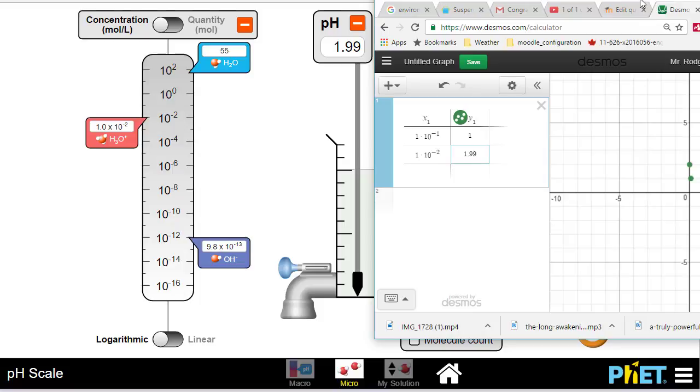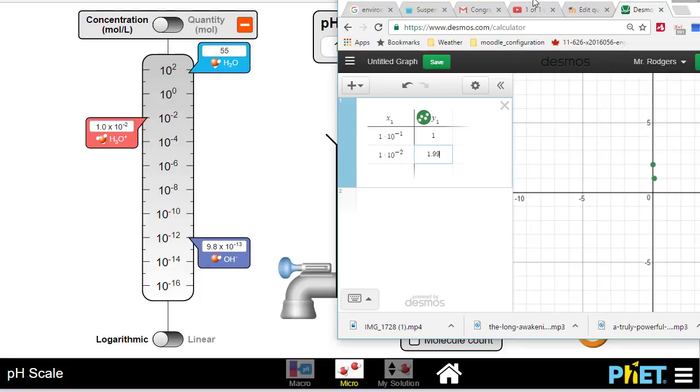Continue that until you get about 5 points on your graph, and then we're going to do a regression.